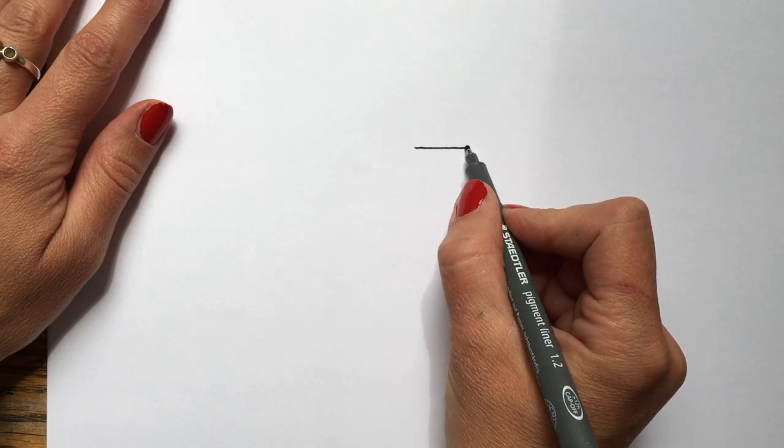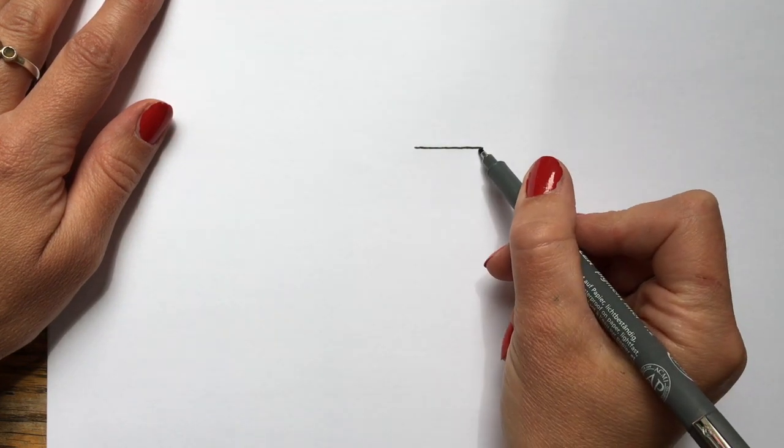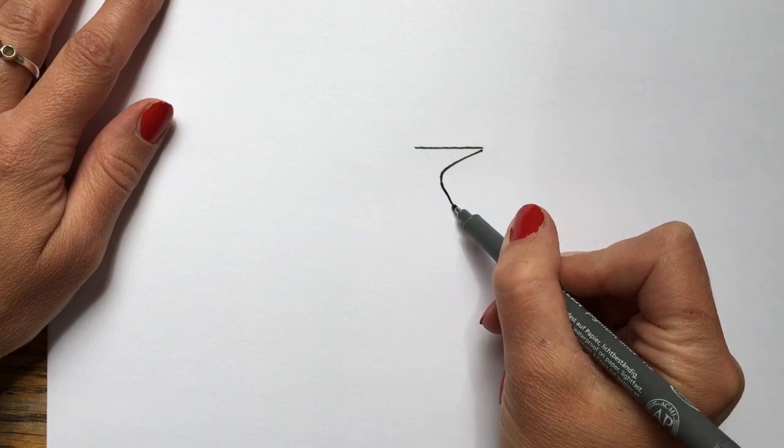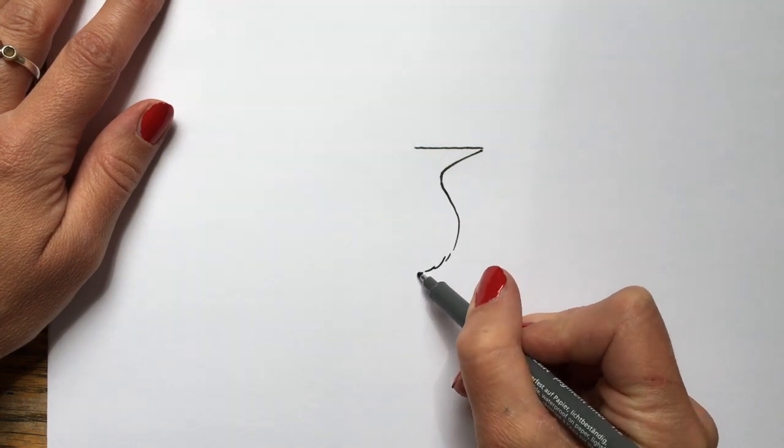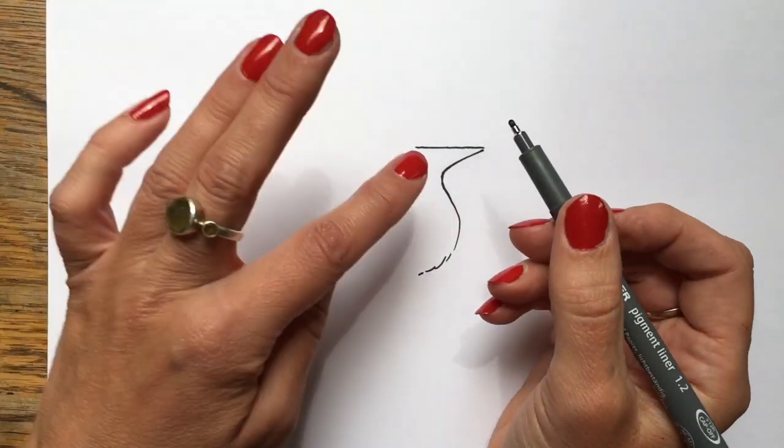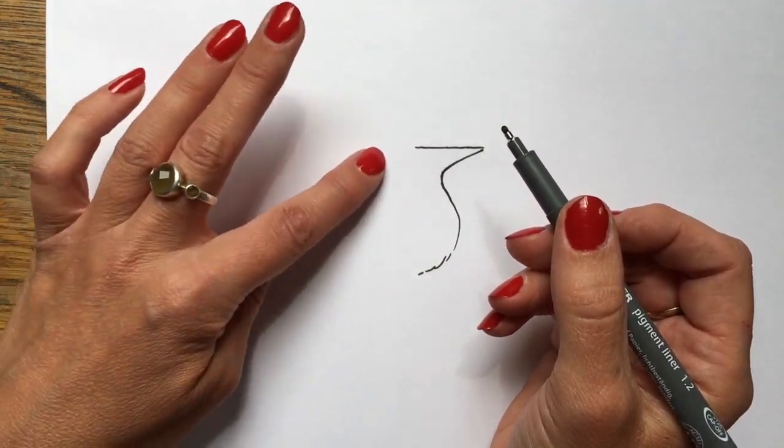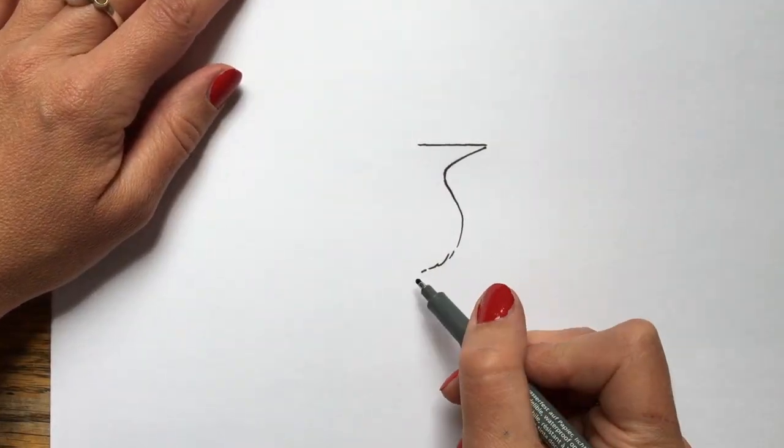So we start with a long, hedgehoggy nose. I always think that my hedgehog looks a little bit like the shape of a jug. You see? Imagine a jug handle there. So that's the shape I start with.